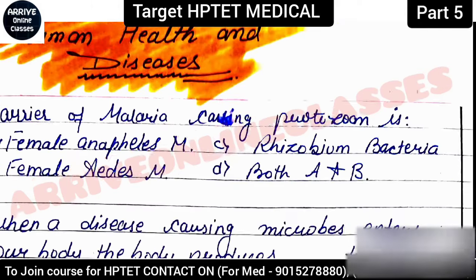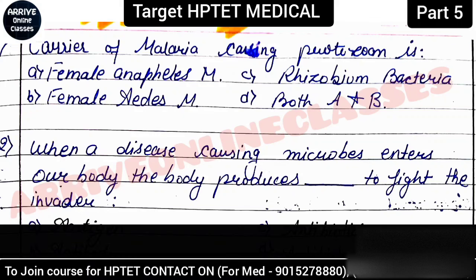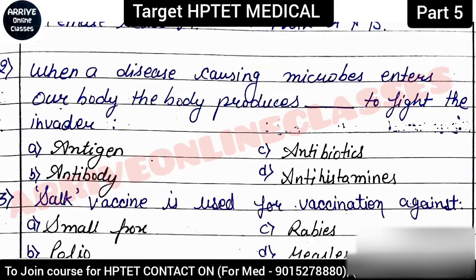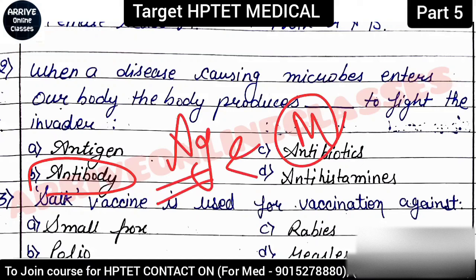The next question: 'When a disease-causing microbe enters our body, the body produces what to fight the invader?' When any microorganism enters the body from outside, the body produces antibodies. These antibodies work against the specific antigen. The microorganism entering acts as an antigen and then an antigen-antibody reaction takes place.